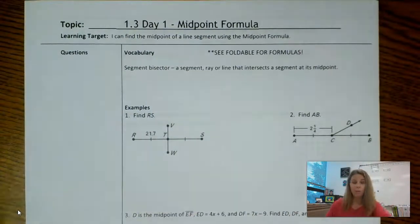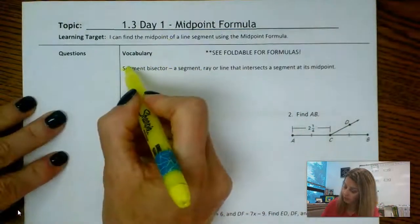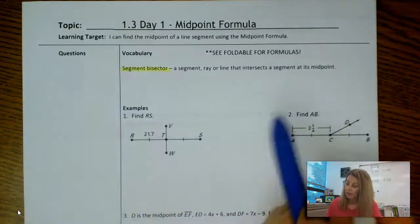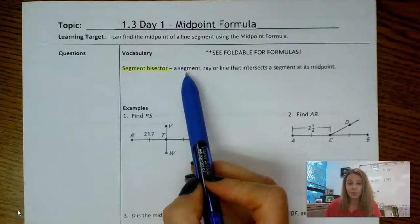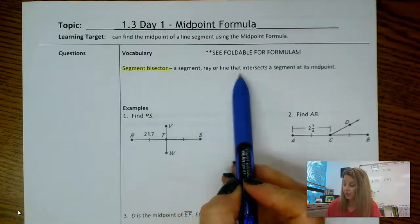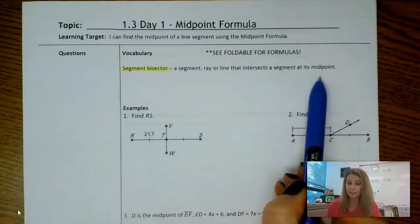We really just have one new vocabulary term: segment bisector. A segment bisector is a segment, ray, or line that intersects a segment at its midpoint.